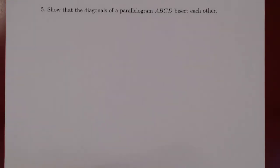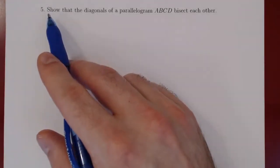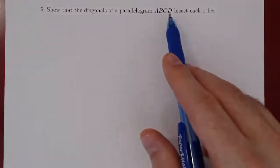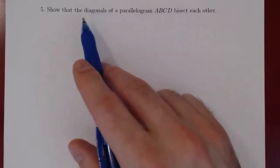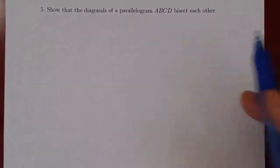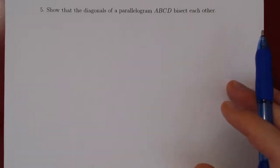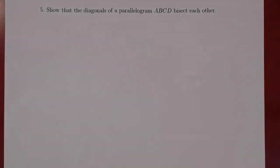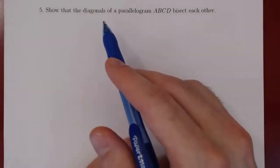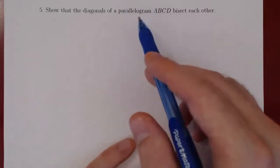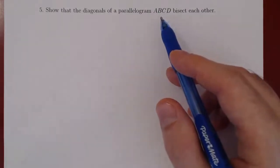In this video, we are going to prove the converse of the result in our previous video. The previous video said that if you have a quadrilateral where the diagonals bisect each other, the quadrilateral was automatically a parallelogram. Here we are flipping the assumption with the conclusion. So the result we're going to prove: show that the diagonals of a parallelogram ABCD must bisect each other. Therefore, the conclusion from this video and the other one is that a quadrilateral can only be a parallelogram if and only if its diagonals bisect each other.